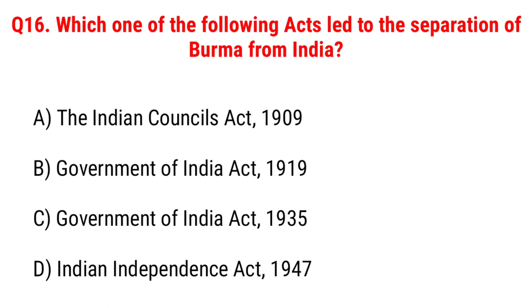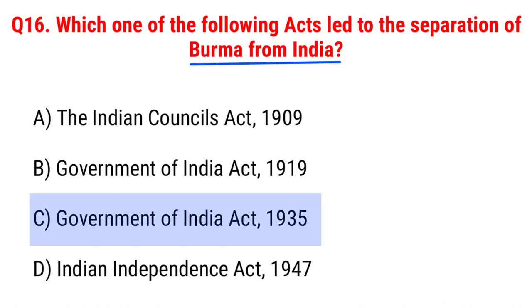Next question: which one of the following acts led to the separation of Burma from India? Option A, the Indian Council Act 1909; B, Government of India Act 1919; C, Government of India Act 1935; D, Indian Independence Act 1947. The right answer is Option C, Government of India Act 1935.